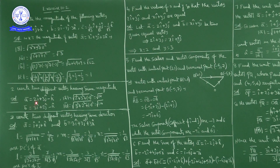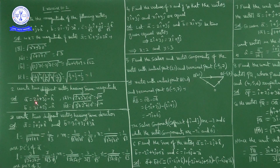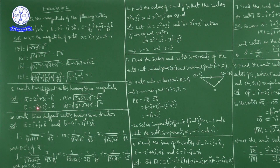For example, let a̅ = 2î + 3ĵ − k̂ and b̅ = 3î + 2ĵ − k̂. These are two different vectors. Magnitude of a̅ = √(4 + 9 + 1) = √14. Magnitude of b̅ = √(9 + 4 + 1) = √14. So magnitude of a̅ = magnitude of b̅ = √14, and a̅ and b̅ are two different vectors having the same magnitude.